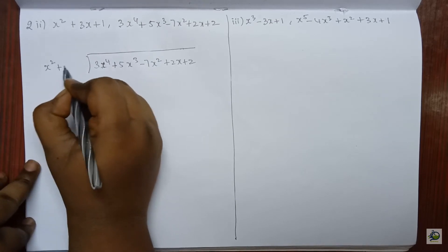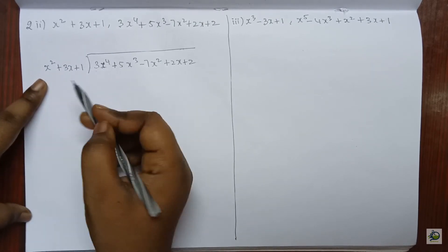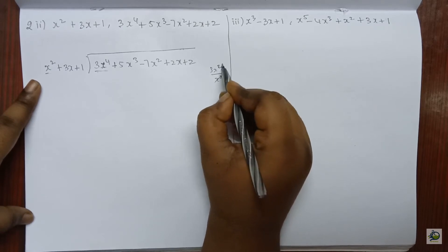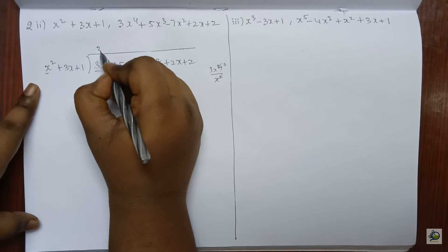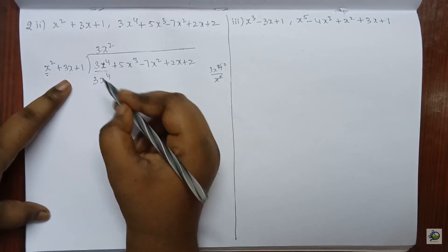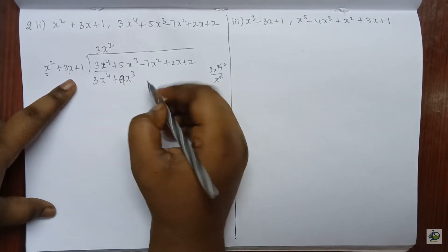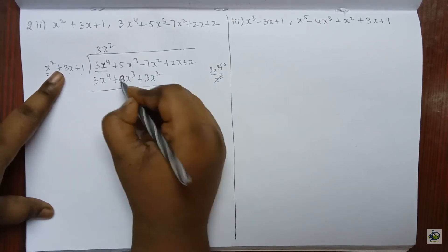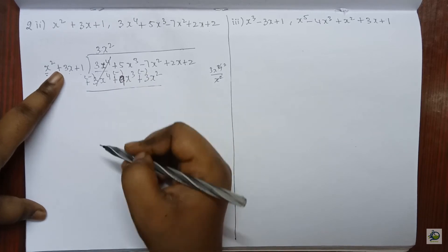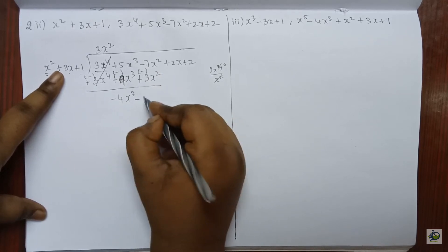We divide 3 x power 4 by x square — x square and x square get cancelled and 2 will remain, giving 3 x square. x square into 3 x square is 3 x power 4. 3x into 3 x square is plus 9 x cube. 1 into 3 x square is plus 3 x square. Now we change the sign: plus becomes minus, plus becomes minus, and minus. These both get cancelled. 5 minus 9 is minus 4 x cube; minus 7 minus 3 is minus 10 x square. Now I bring this plus 2x down.